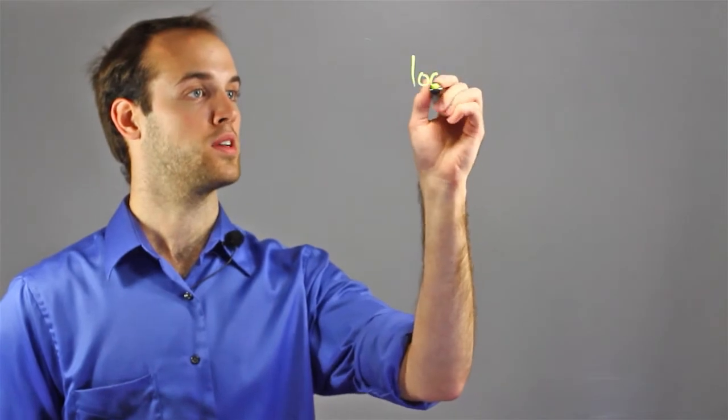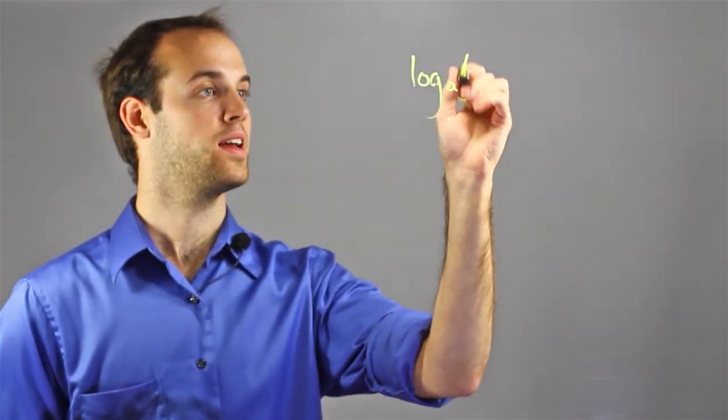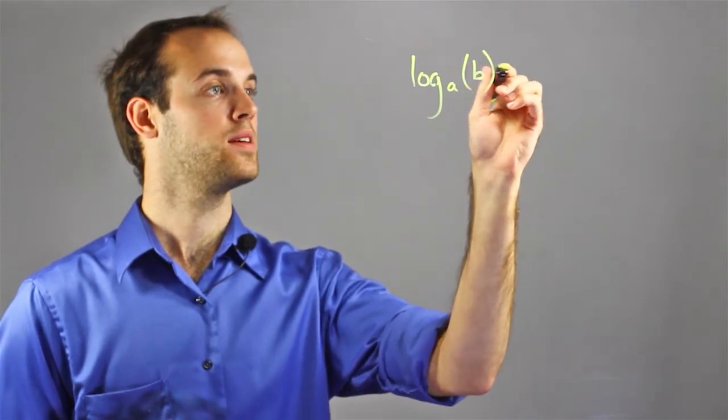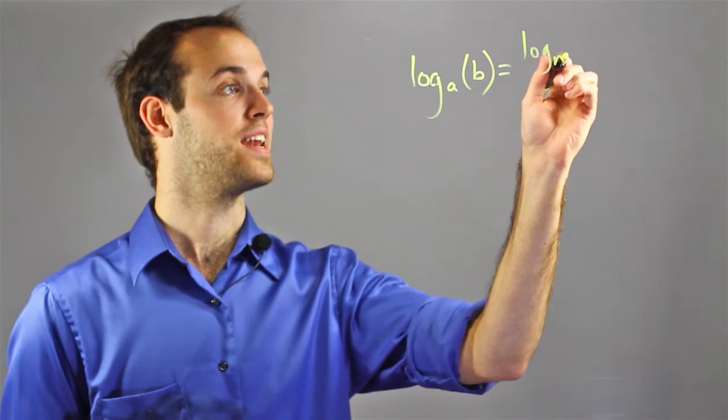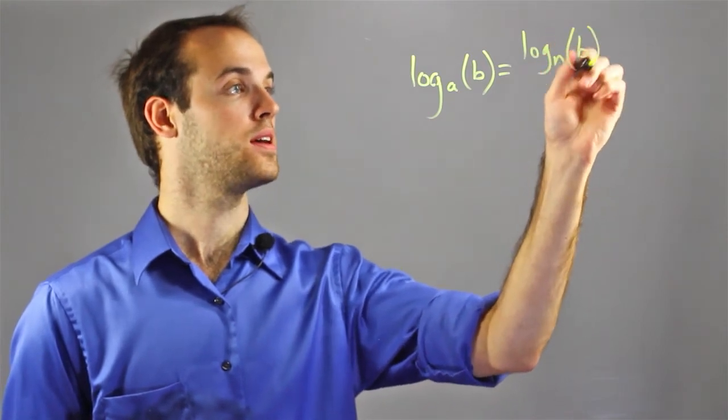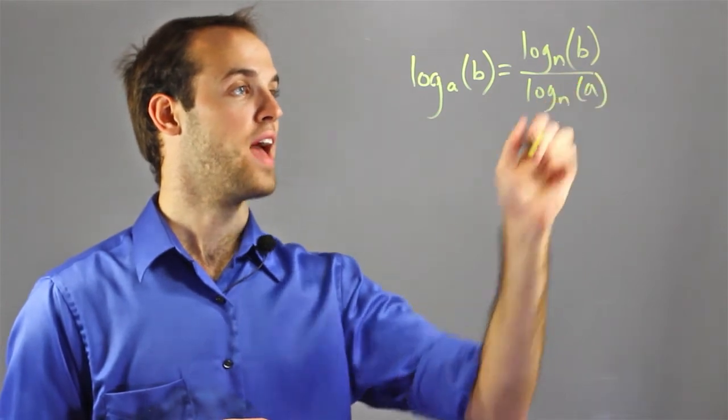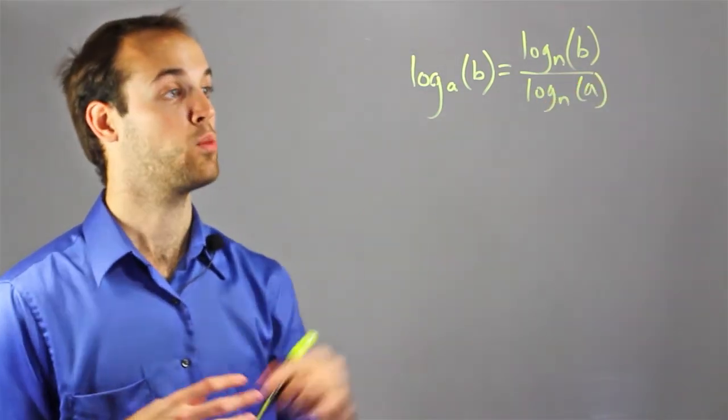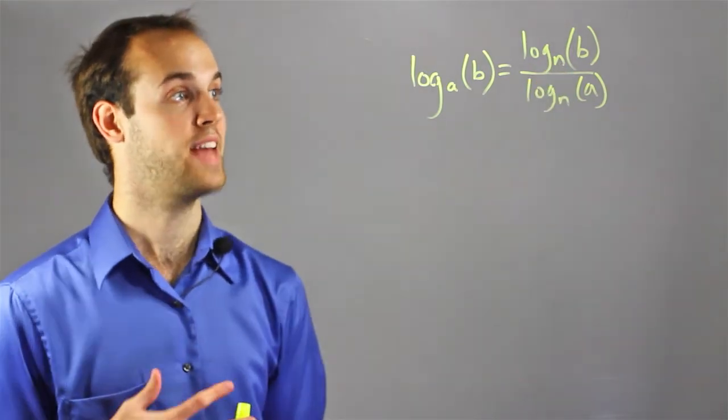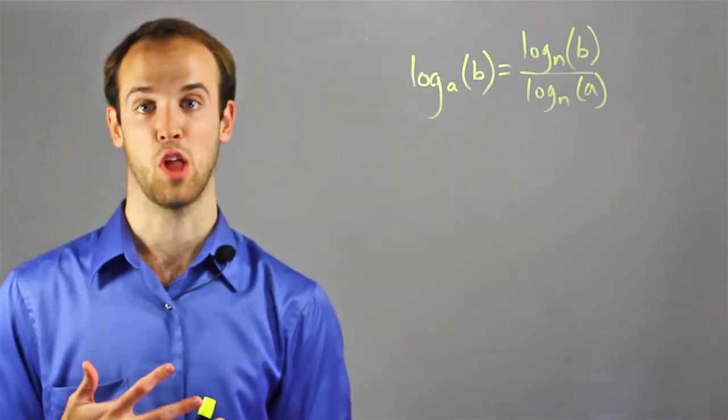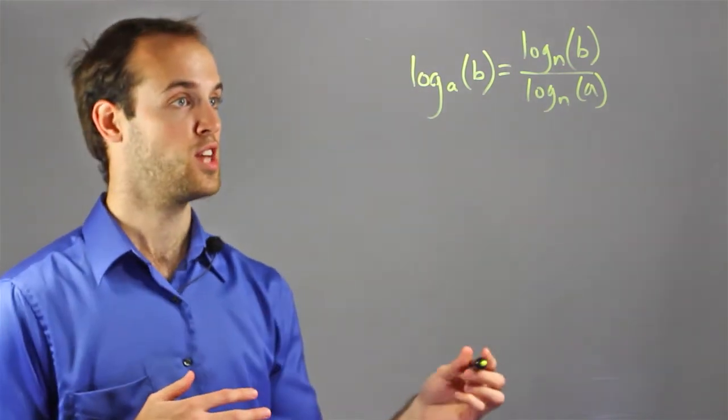The change of base formula is written just like this: log base a of b equals log base n of b over log base n of a. And what a lot of people tend to do for n is to plug in base 10, because base 10 is the standard logarithm function on most standard scientific graphing calculators.